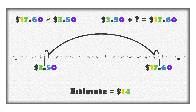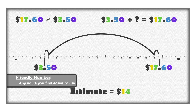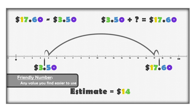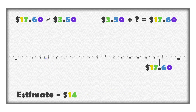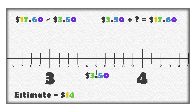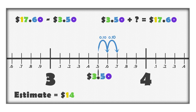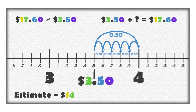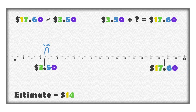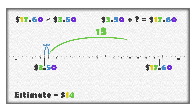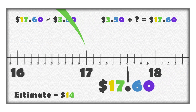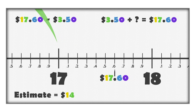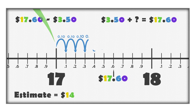This is called adding to get a friendly number. A friendly number is any value you find easier to use. For example, we can add $0.50 to make four whole dollars. A dime is one-tenth of a dollar, so we are adding five-tenths of a dollar, or 50 cents. Then add $13 to make $17.00, and then add $0.60 to make $17.60.